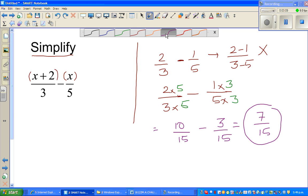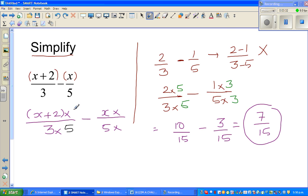I am going to write like this: (x+2)/3 times something minus x/5 times something. What should I multiply? You have to multiply by 5 here, so you have to also multiply this with 5. You have to multiply this with 3 and this also with 3. So this becomes 5(x+2)/15 minus 3x/15.